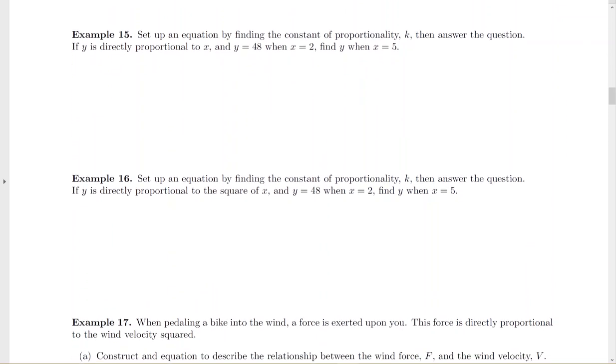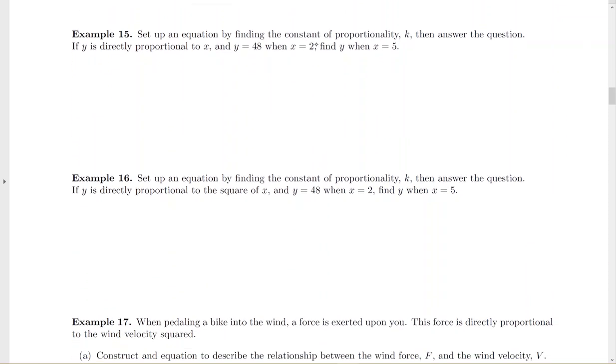For the next question, similar idea. Set up an equation, find the constant of proportionality, then answer the question. So we're going to start out with this. Y is directly proportional to x. Then they give me some information to find K. Solve for K. Divide off by 2. Get the K by itself.